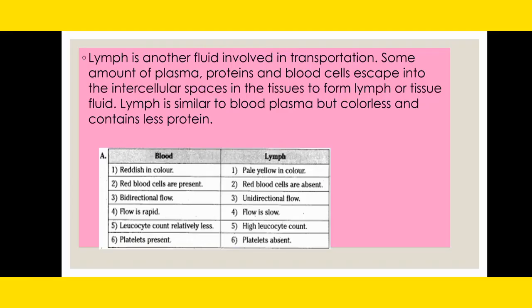Let us know something about lymph. Lymph is another fluid involved in transportation. Some amount of plasma, proteins, and blood cells escape into the intercellular spaces in the tissues to form the lymph or tissue fluid. Lymph is similar to blood plasma but it is colorless and contains less proteins. Comparing blood and lymph: blood is reddish in color, lymph is pale yellow. Red blood cells are present in blood but absent in lymph. Blood flow is bidirectional, but lymph flows unidirectional in only one direction. Blood flow is rapid, but lymph flow is slow.